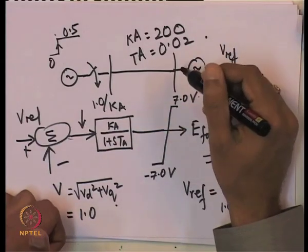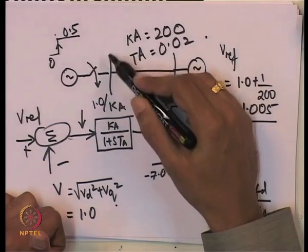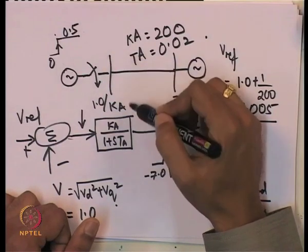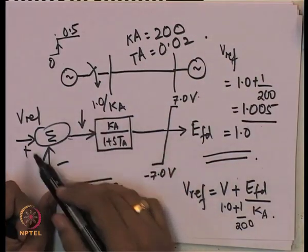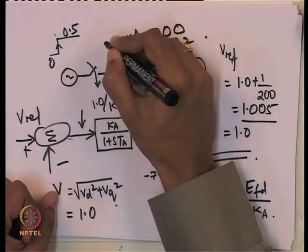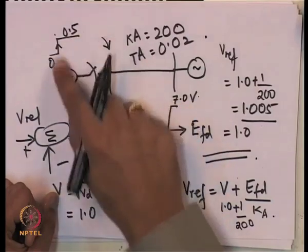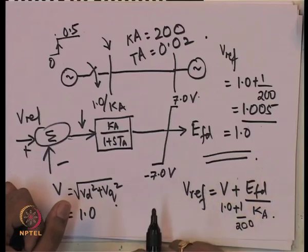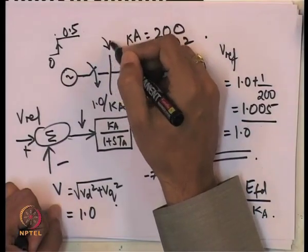As soon as some current starts flowing — that is, some power starts flowing — the terminal voltage tends to drop. Without an automatic voltage regulator, this voltage would drop and EFD would remain the same. But with a voltage regulator, as soon as V drops, Vref stays the same, so EFD is increased. This voltage is regulated and EFD is not constant. The AVR saves us the trouble of manually changing EFD every time we change the mechanical power.